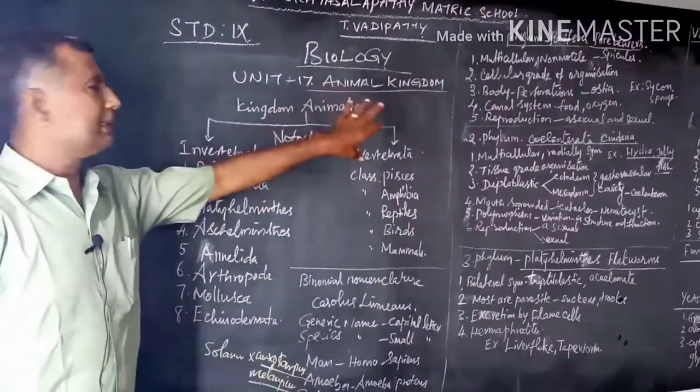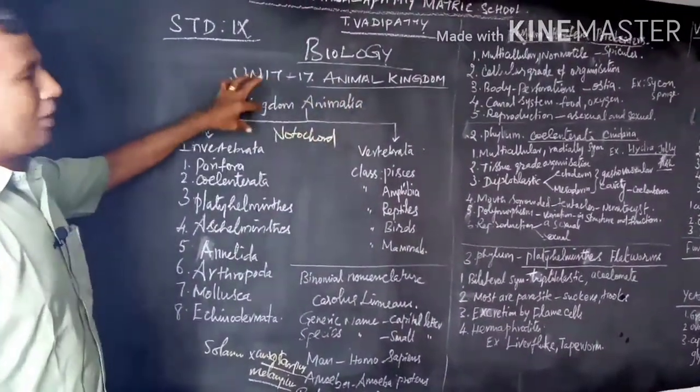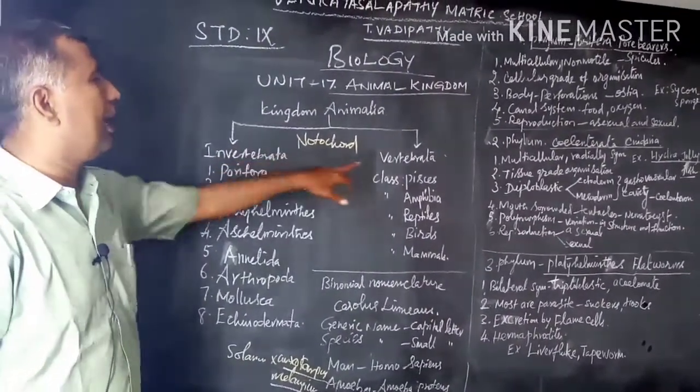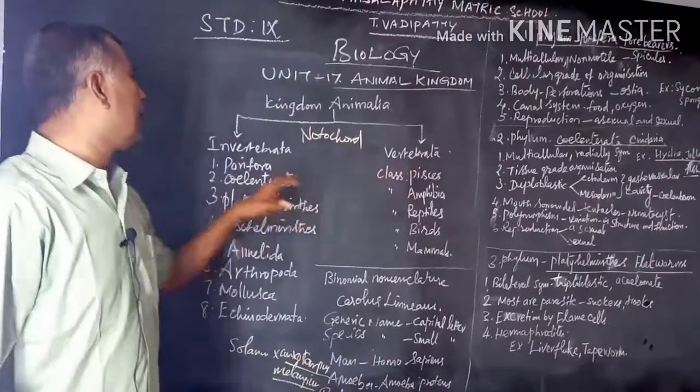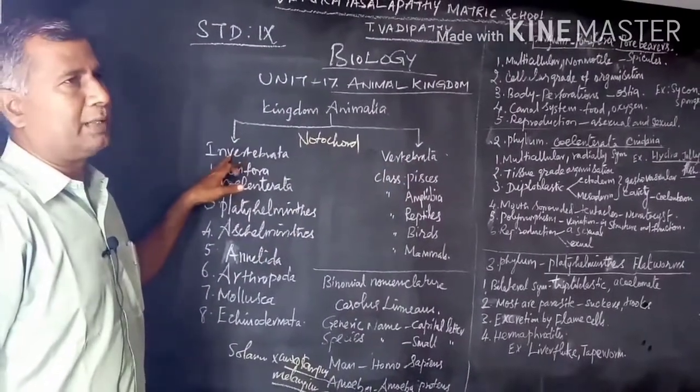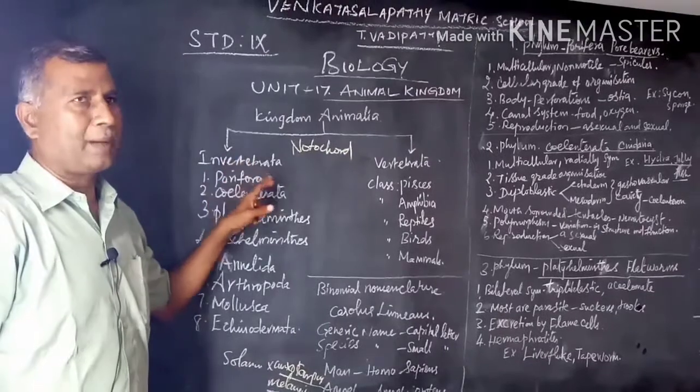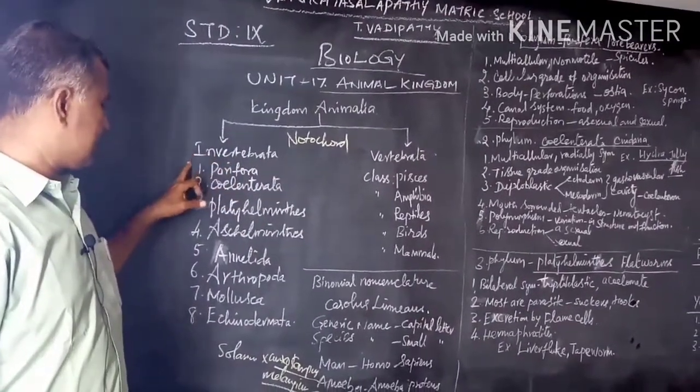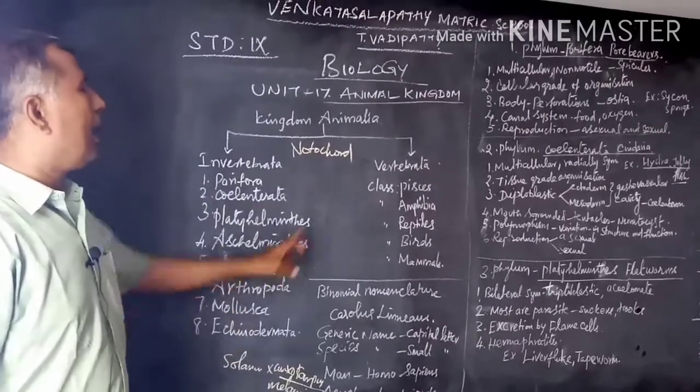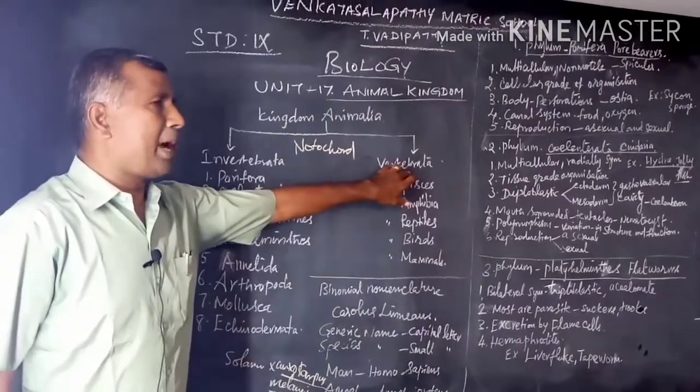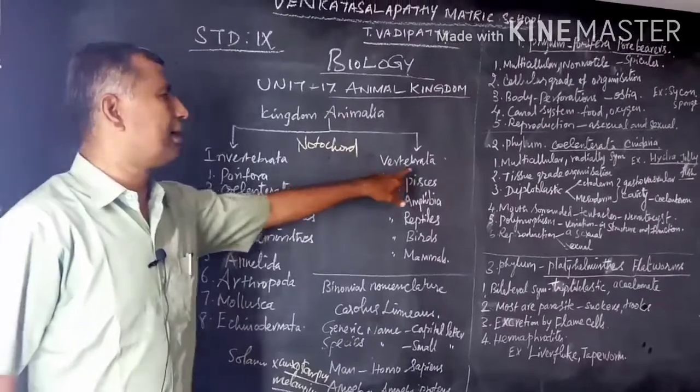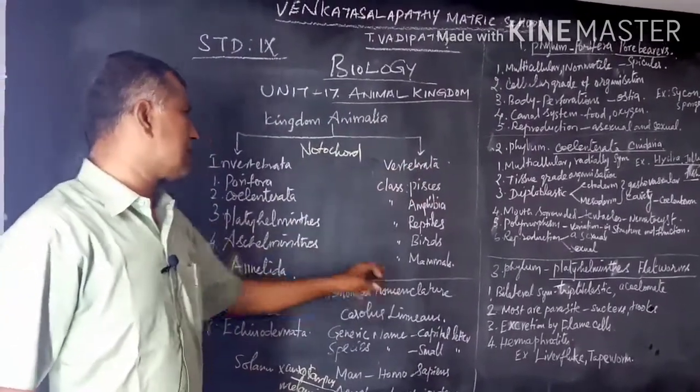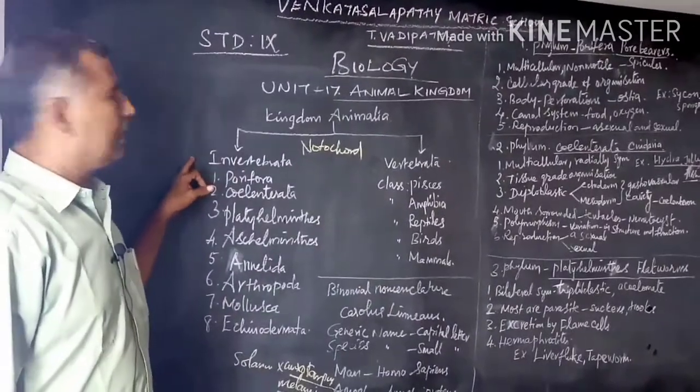On the basis of presence or absence of notochord or backbone, the animals are classified into Invertebrata and Vertebrata. Invertebrata means those animals which have no backbone, which consists of eight phyla. The animals which have backbone or dorsal notochord are called Vertebrata, which includes five classes.